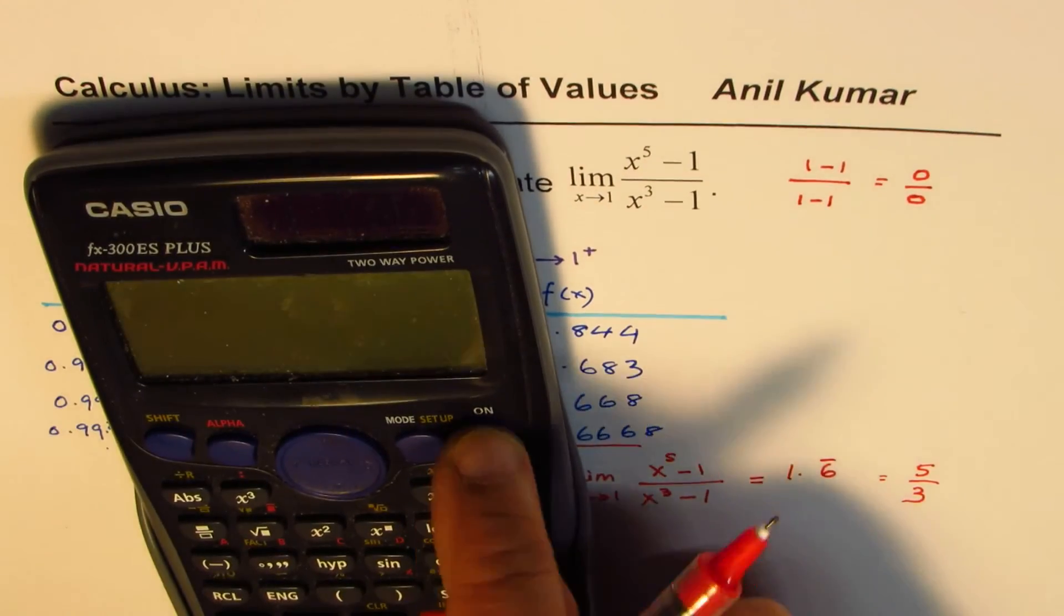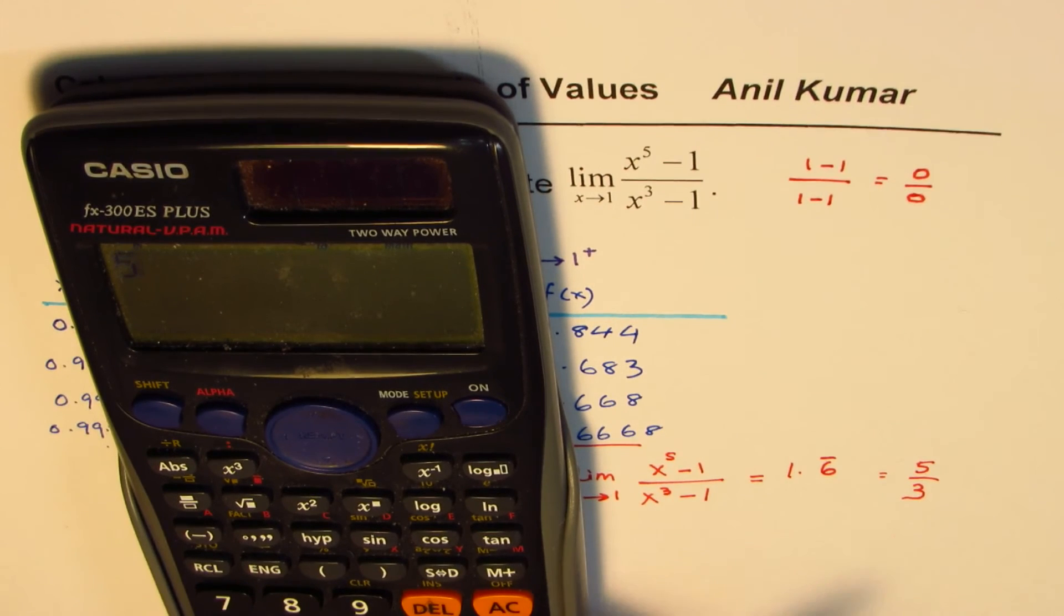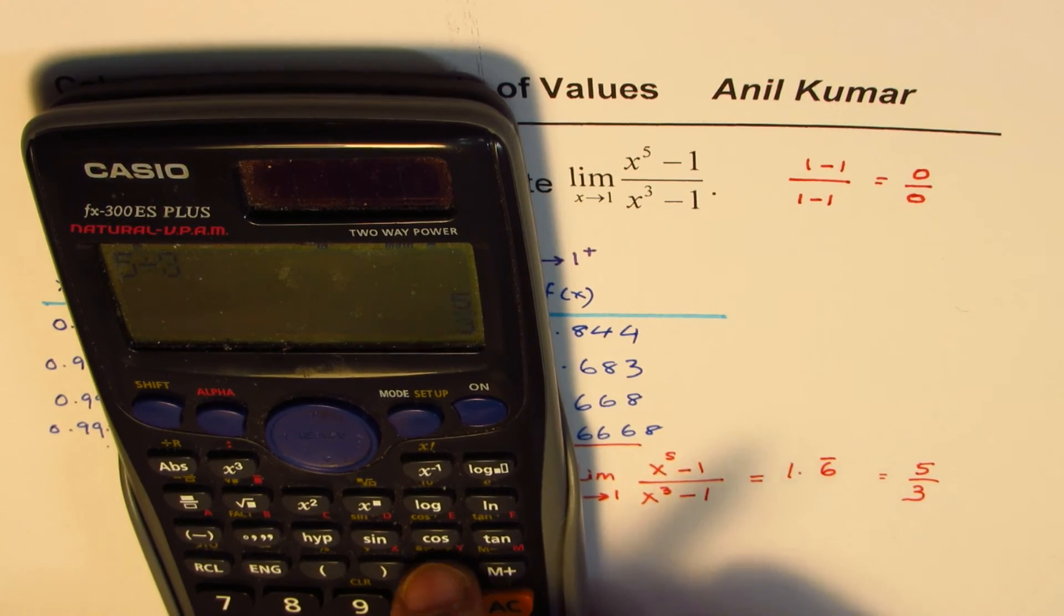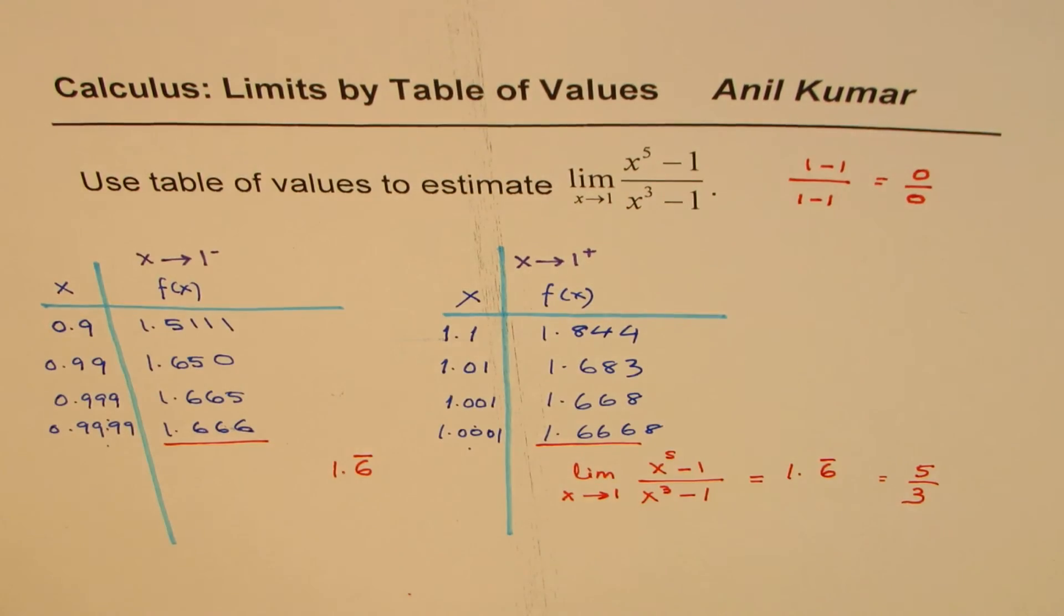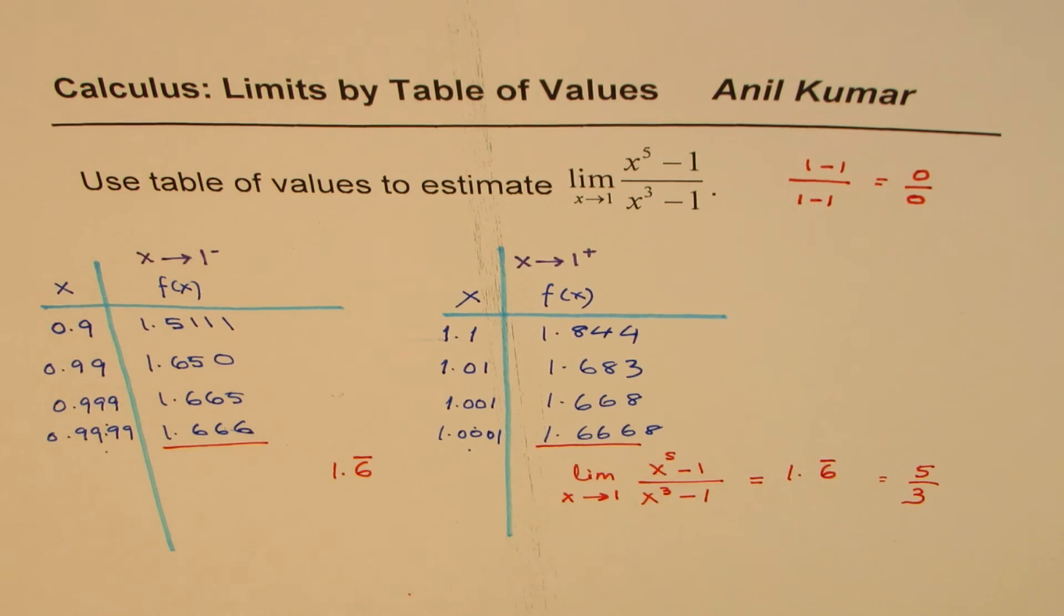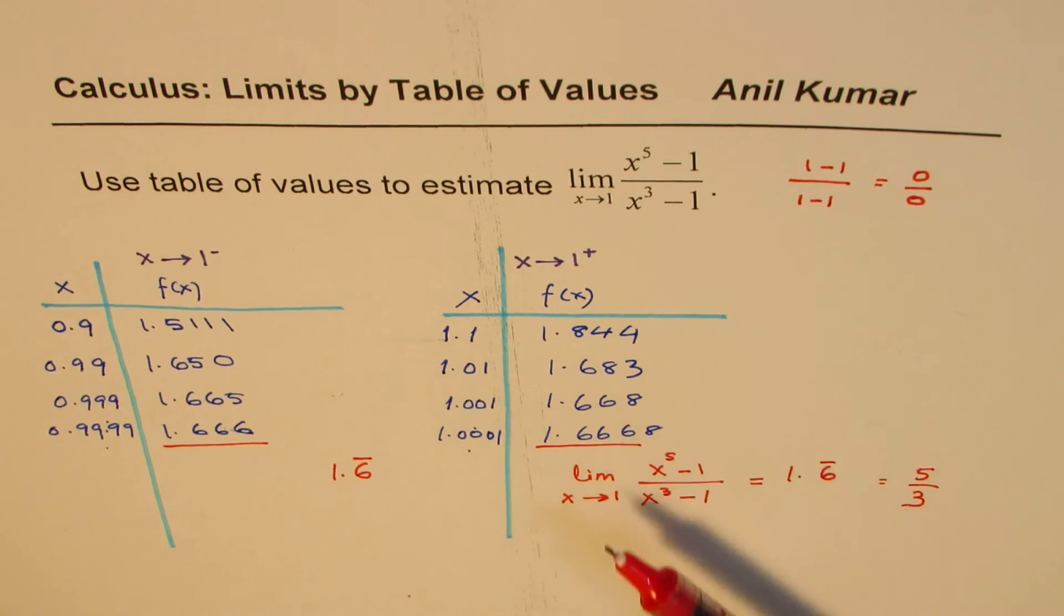Let's check that. We will learn a method soon where we could do this without going through the table of values. 1.6 recurring. So, L'Hopital's rule is the one which will help us to find immediately the limit of this function. So we will learn that later.